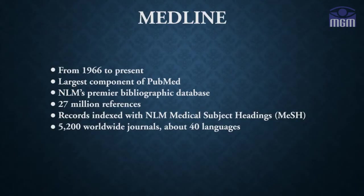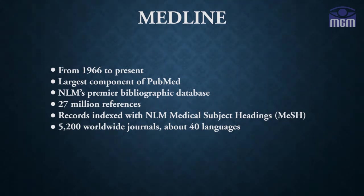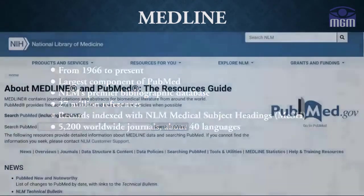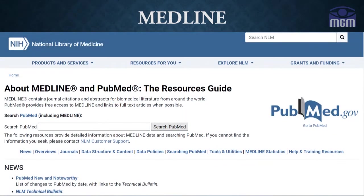Medline is the largest component of PubMed. It is a bibliographic database that contains more than 27 million references, covering literature published from 1996 to the present. For details prior to 1996, old Medline data can also be used. Currently, more than 5,200 worldwide journals in 40 different languages are cited in Medline.